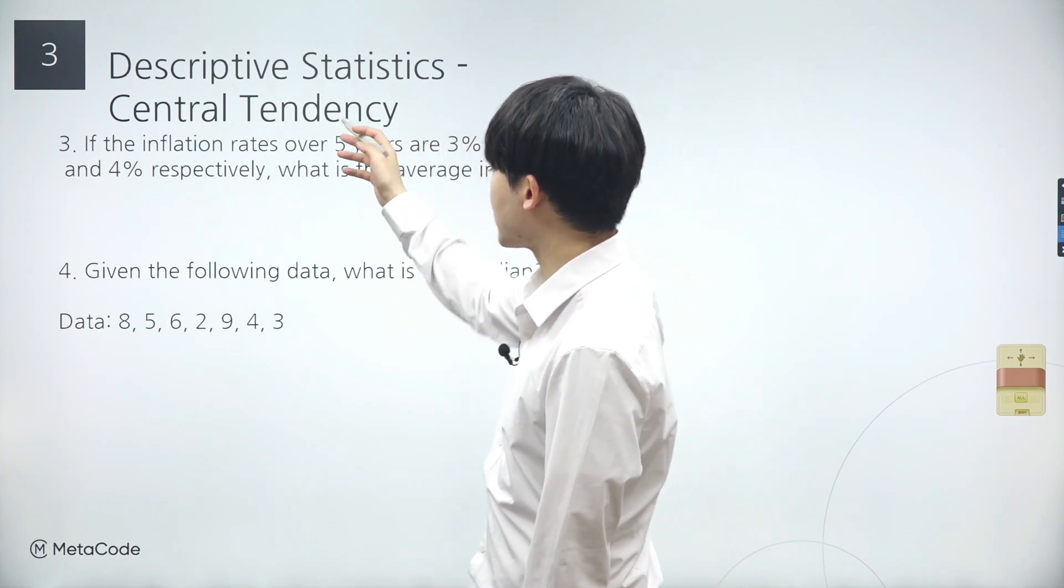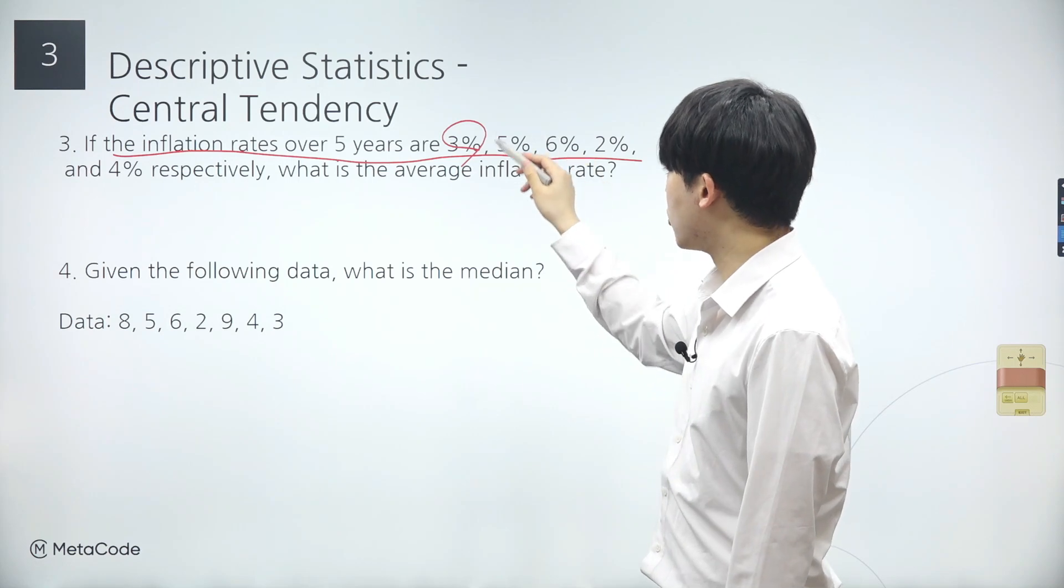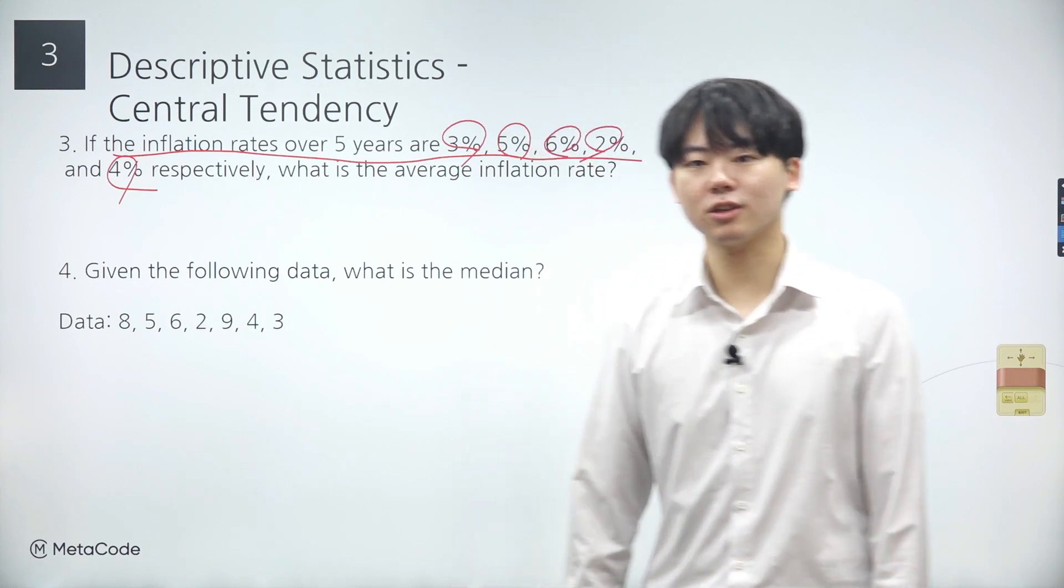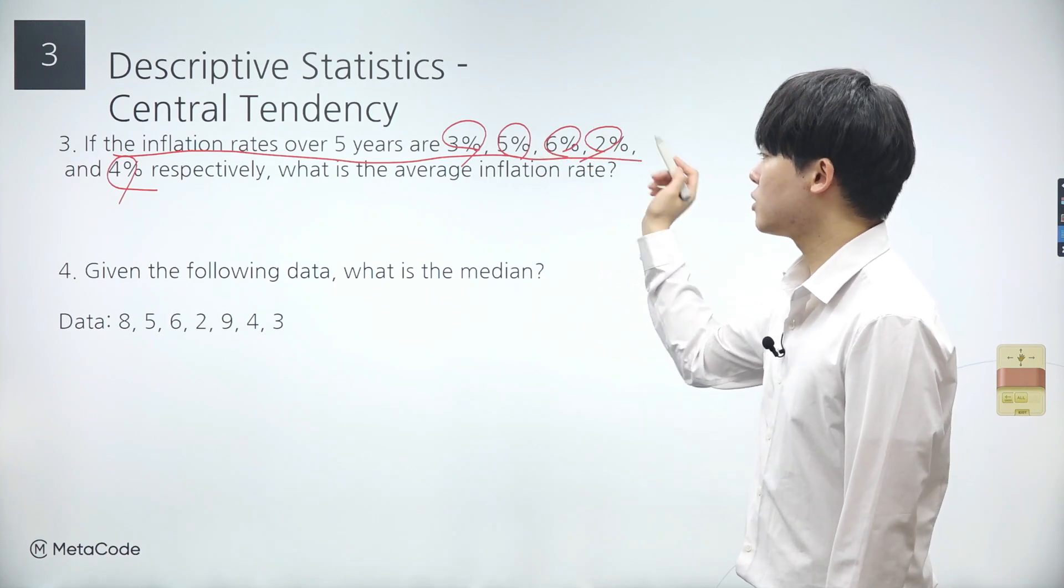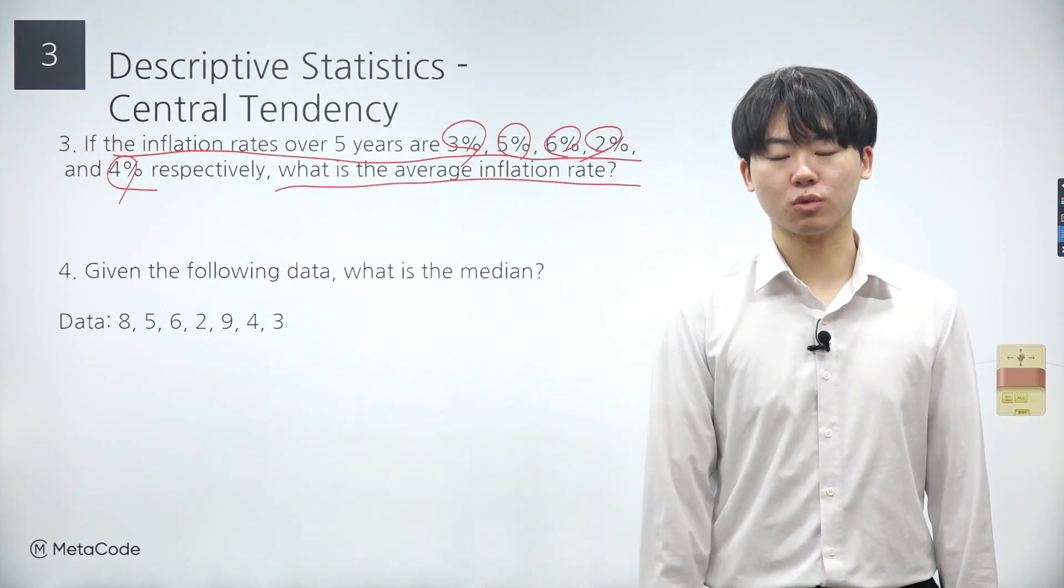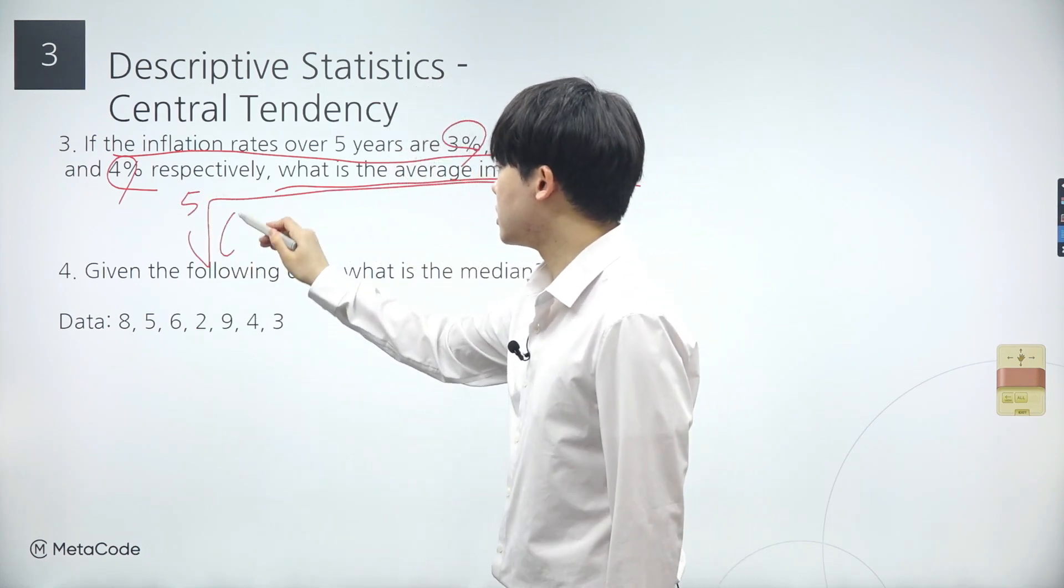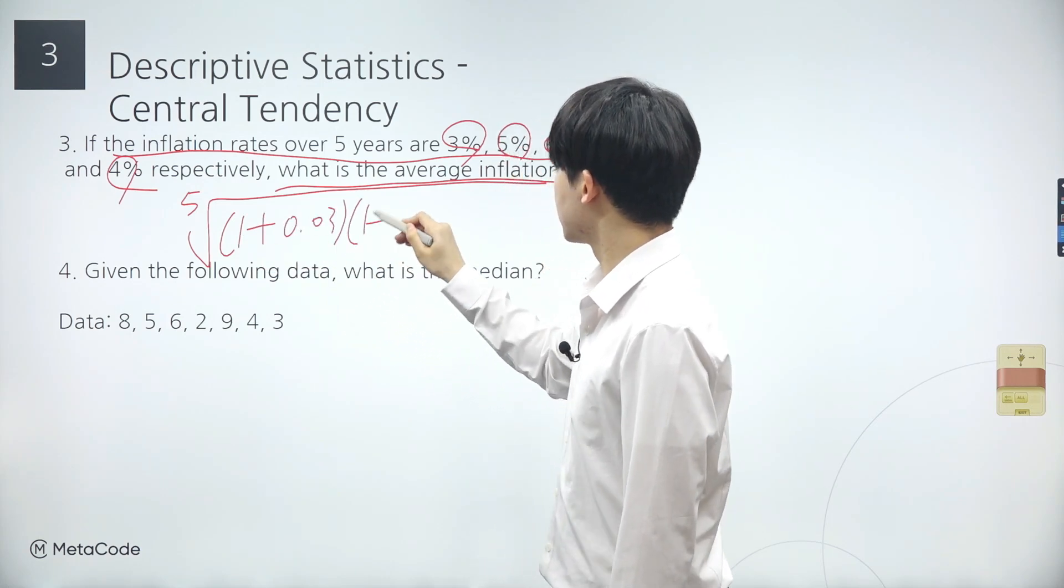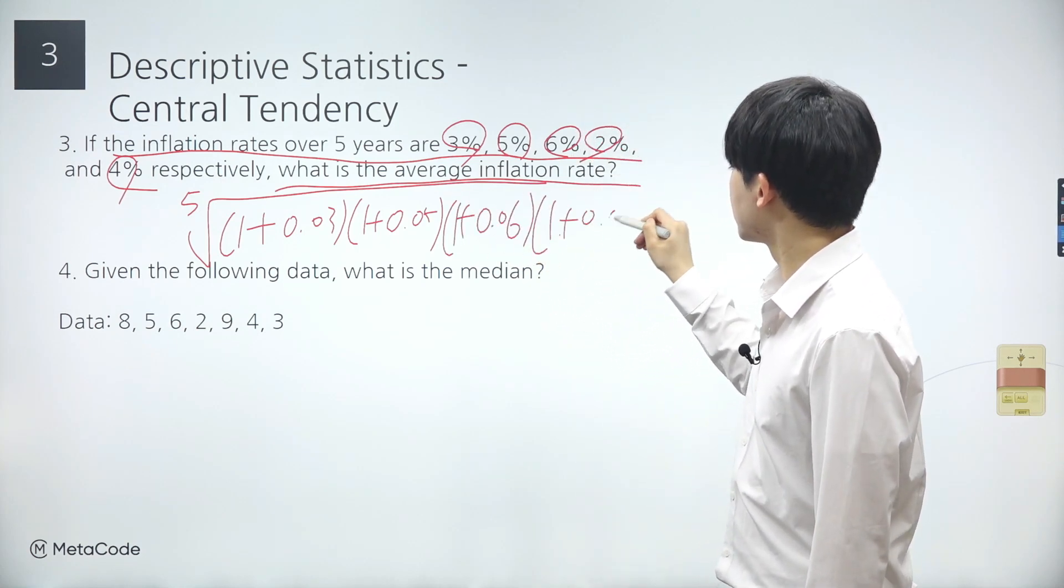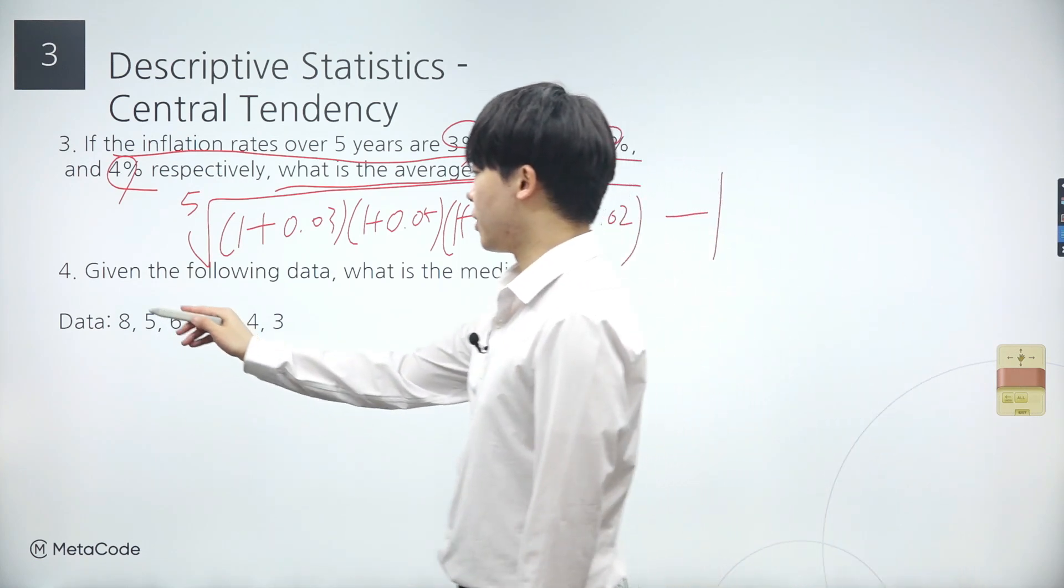Now let's move on to the next problem, which involves calculating the geometric mean. Consider the inflation rates over 5 years, 3%, 5%, 6%, 2%, and 4% respectively. Oh, they're weird looking inflation rates, and it's not good for the economy. Anyway, how do we calculate the average inflation rates when they fluctuate up and down? Since we have 5 data points, we're going to take the fifth root of the product, which includes 1 plus 0.03, 1 plus 0.05, 1 plus 0.06, 1 plus 0.02, and lastly 1.04. Don't forget to subtract 1 after taking the fifth root. If you calculate this, you'll get the geometric mean of the interest rates.